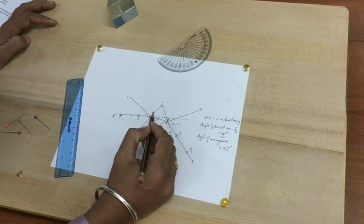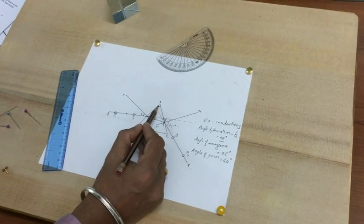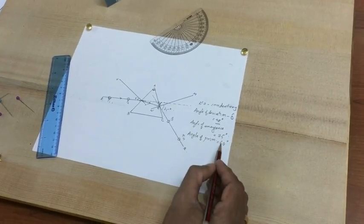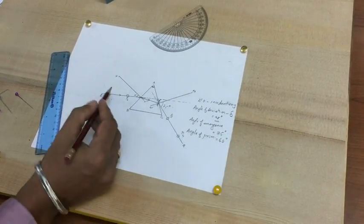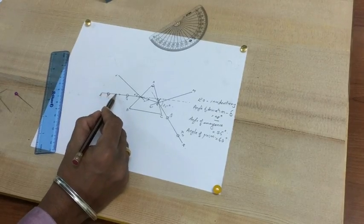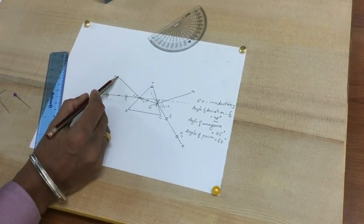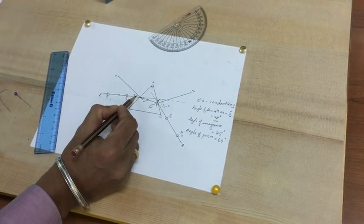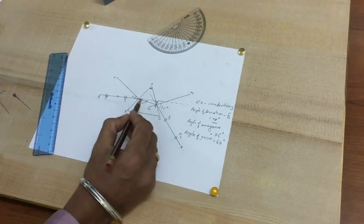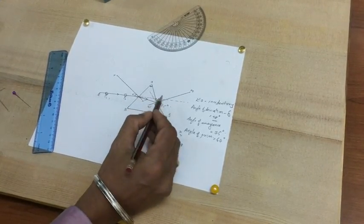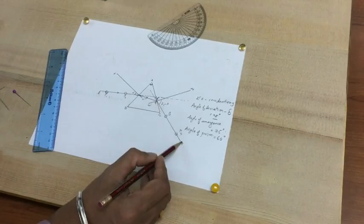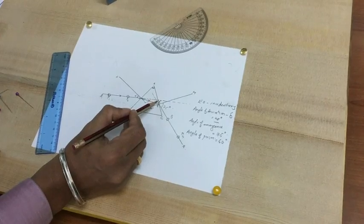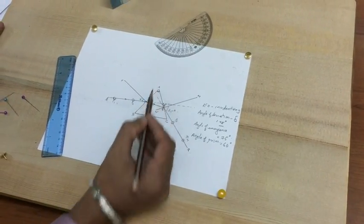The angle of prism. This angle is called the angle of prism. The angle of prism for an equilateral prism is 60 degrees. You can see here, this is the incident ray, this is the normal, and the angle formed is the angle of incidence. This is the refracted ray, this is the emergent ray, and this is the angle of emergence. And this is the angle of deviation, and this is the angle of prism.